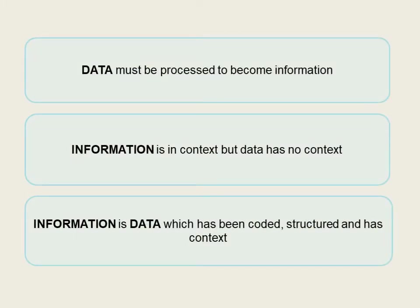A bit of a recap for you. Data must be processed to become information. Information is in context but data has no context. Information is data which can be coded, structured and has context. So data alone needs to have a bit more information with it in order for it to be understood.